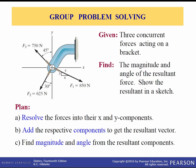Let's do one last problem. We have three forces: F1 is 850 newtons in the fourth quadrant on a 3-4-5 triangle; F2 is 625 newtons in the third quadrant at an angle of 60 degrees from the x-axis; and F3 is 750 newtons at an angle of 45 degrees from the negative x-axis in the second quadrant. We'll resolve each into its Cartesian components, add all the i components and all the j components.